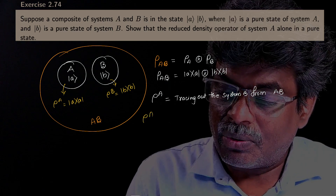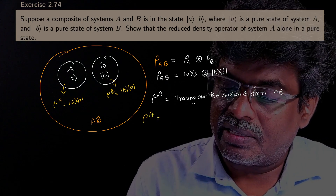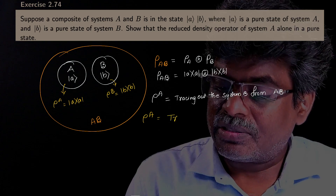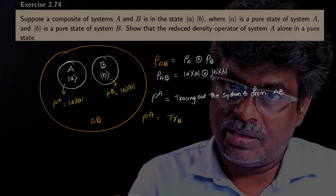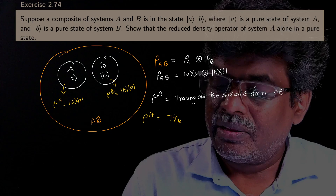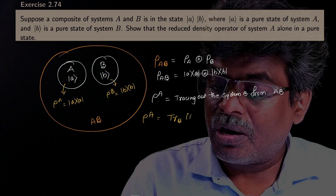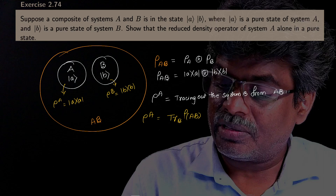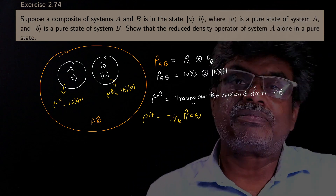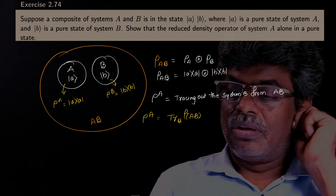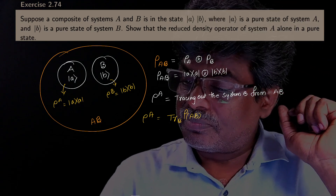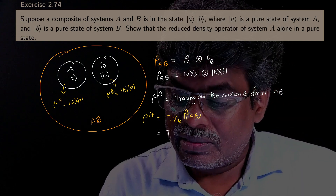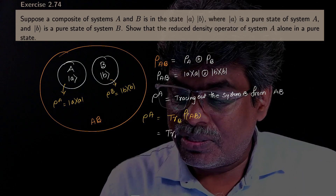So, ρ_A is nothing but the partial trace — tracing out B of the composite system ρ_AB. Let us write this. Tracing out B of the combined density operator, which we already have.